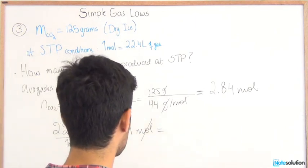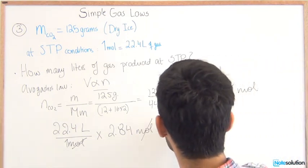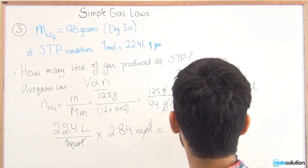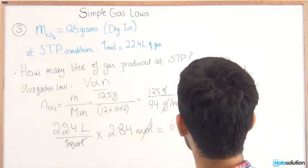If we calculate 22.4 times 2.84 that should give you 63.6 liters of carbon dioxide.